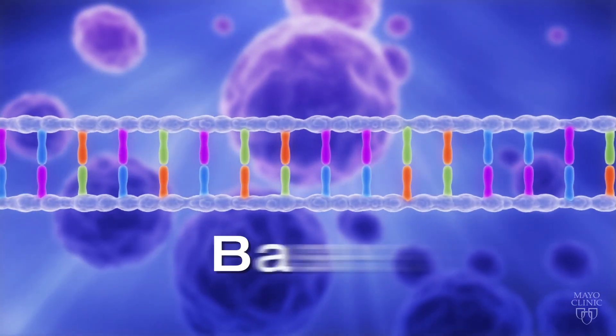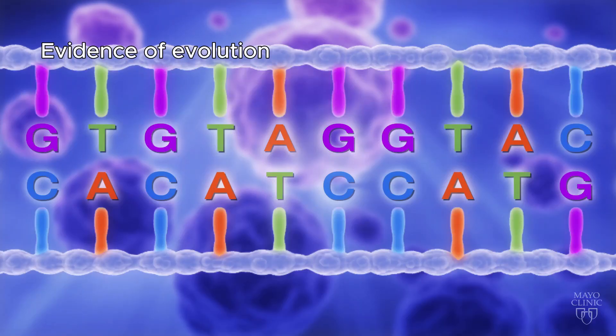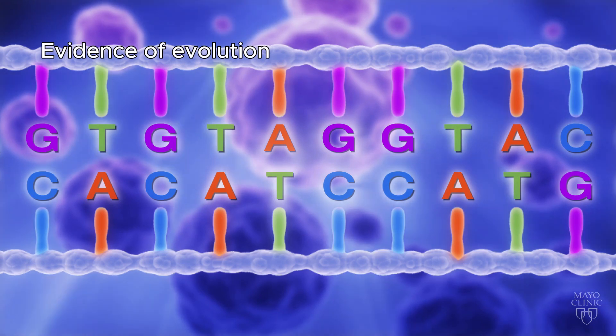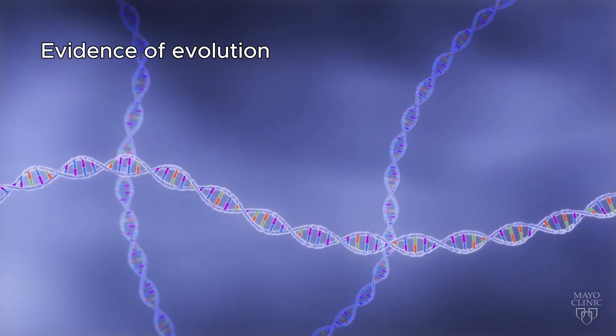We can observe genetic mutations in our DNA when we sequence it. We can take a look at exactly where chromosomes have fused together. Our DNA leaves a nice record of how we evolved in the past.